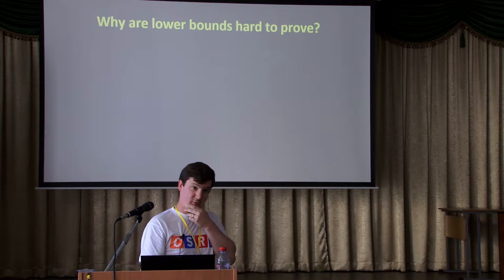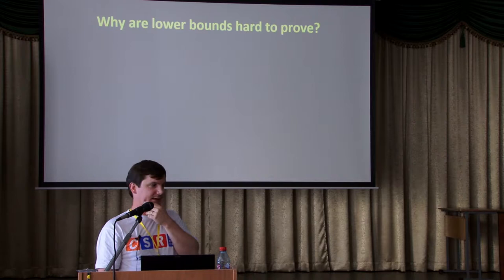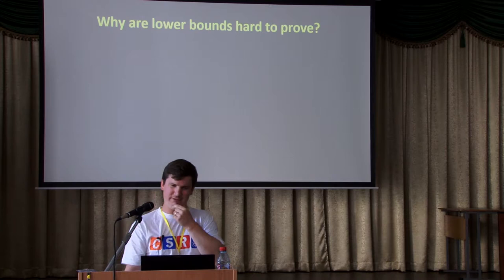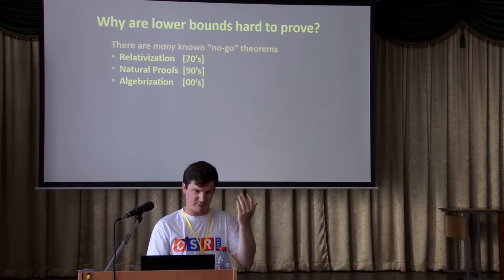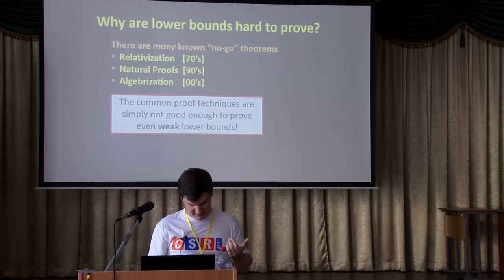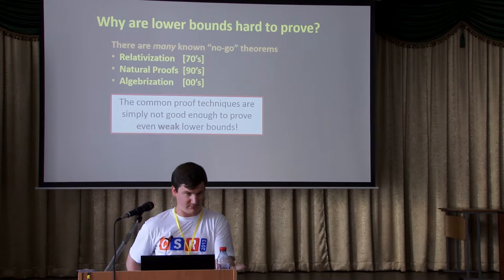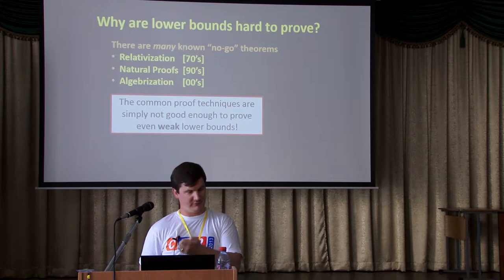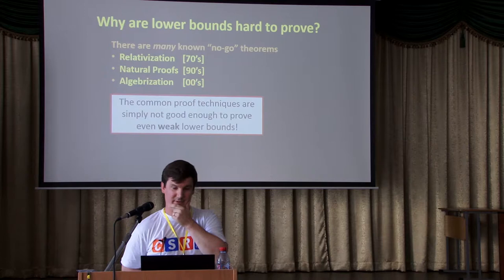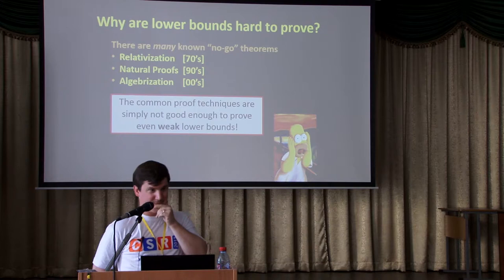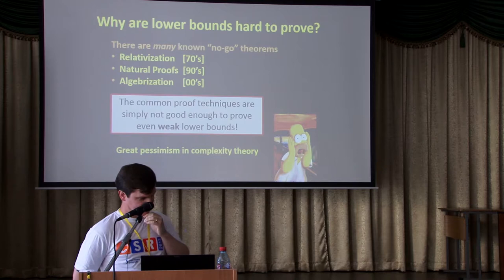So why are these things so hard to prove? Complexity theorists have been very good at identifying precisely why they can't prove various statements — they're really good at being pessimists. There are many no-go theorems in complexity theory with names like relativization, natural proofs, and algebraization. These say, in a nutshell, that the common proof techniques we use in complexity and algorithms are simply not good enough to prove even weak lower bounds — things much weaker than P different from NP. Not only can we not prove this stuff, but we can actually prove that we cannot prove it.